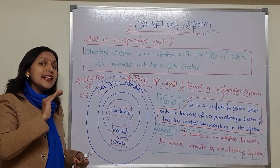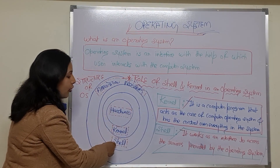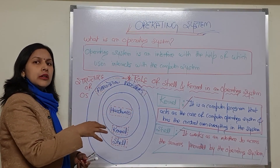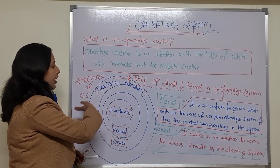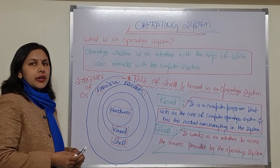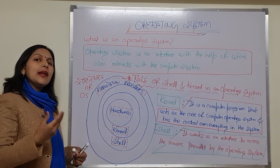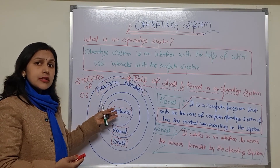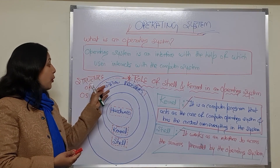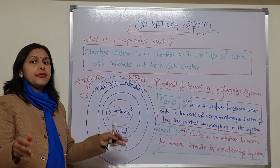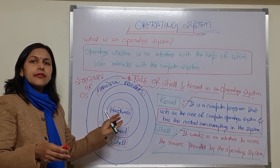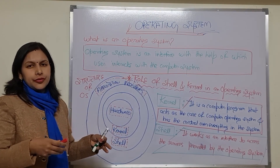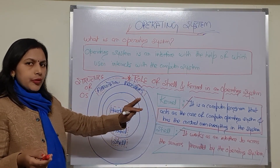After the kernel, we have the layer known as shell. Then on the outside we have application programs — the number of software programs through which the user interacts and gives commands to the computer system, ultimately to the hardware. The operating system divides the work between the kernel and shell.